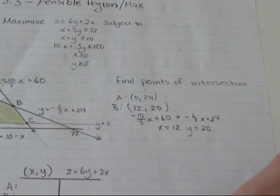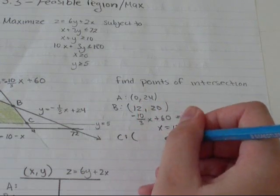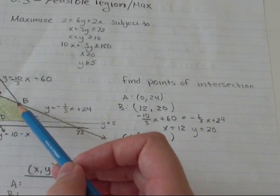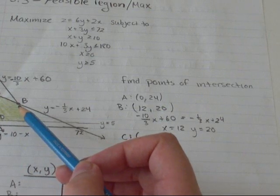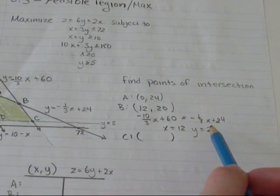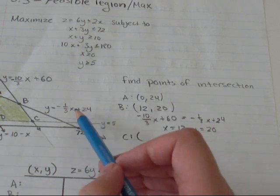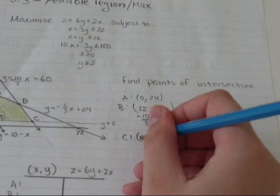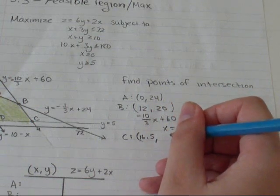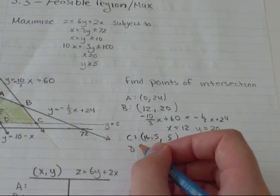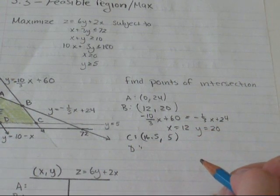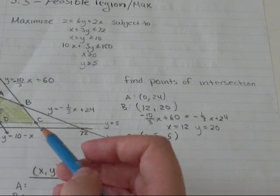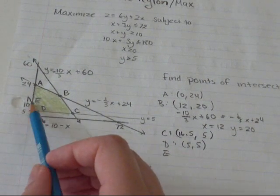And then C, point C, you're going to find the intersection of y equals 5 and y equals negative 10 over 3x plus 60. I'm not going to do it. It's the same method as finding this. You solve for x and then you plug your x back into one of the original equations to solve for y. And when you do that, you get 16.5 and 5. And then D, you do the same method. You'll get 5 comma 5 and E was over here. So we know that it's going to be 0 and 10.